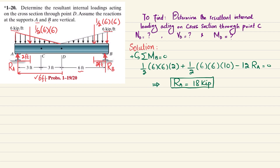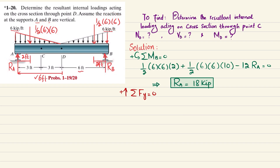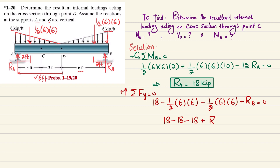Now find RB using the second equilibrium condition: the sum of all forces along the y-direction equals zero, with upward forces taken as positive. So: 18 − 1/2 × 6 × 6 − 1/2 × 6 × 6 + RB = 0, which gives 18 − 18 − 18 + RB = 0. Therefore RB = 18 kips.